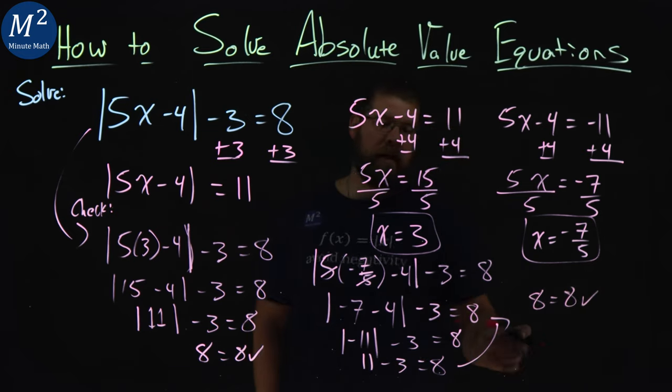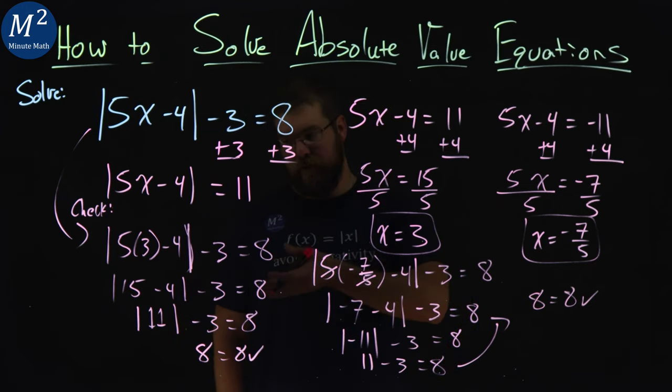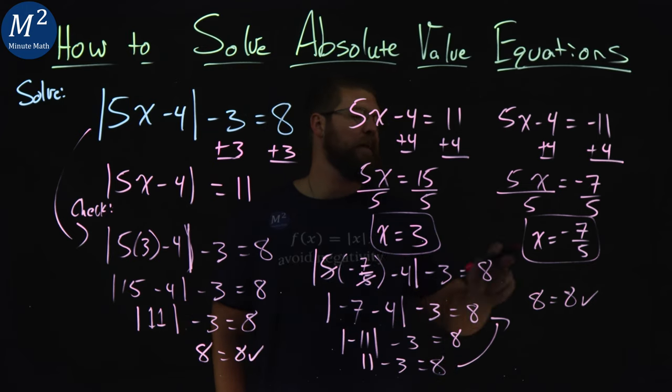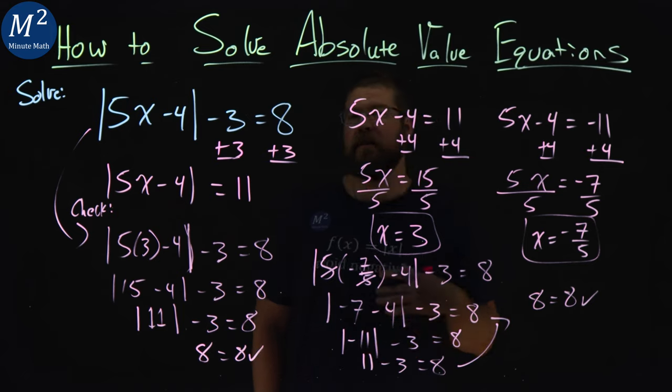Both checks turned out. And so our final answer, proven again, x equals 3 and x equals negative 7 fifths.